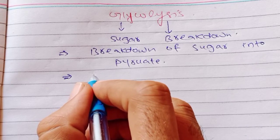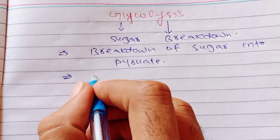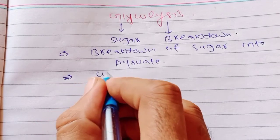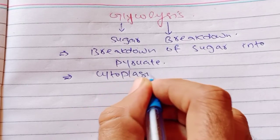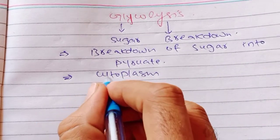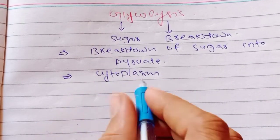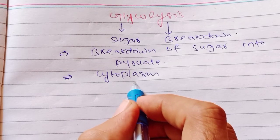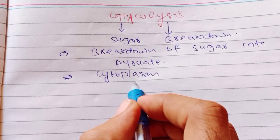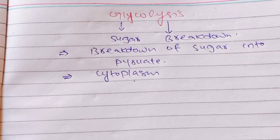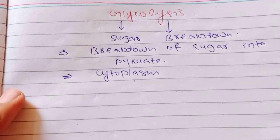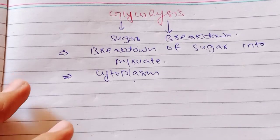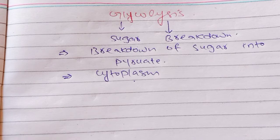Now we will see where exactly glycolysis occurs. The location — glycolysis occurs in the cytoplasm of the cell. This process occurs in the cytoplasm.